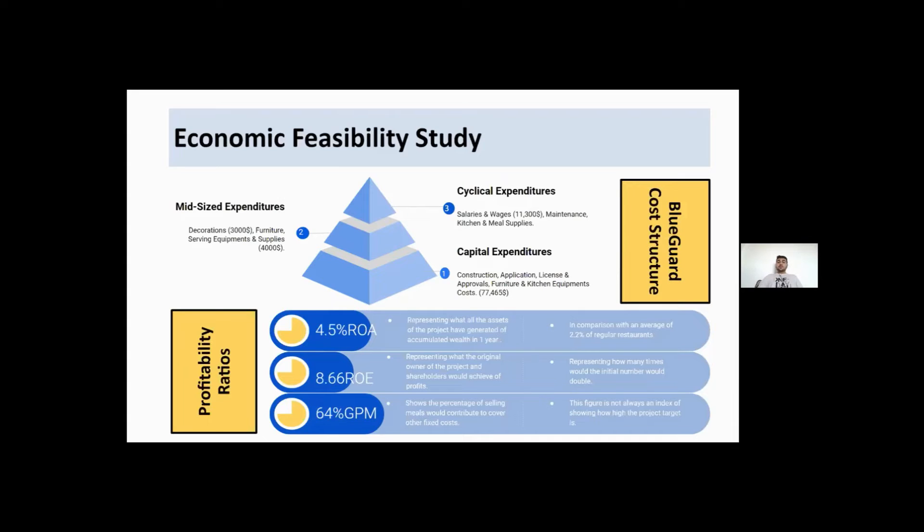So, representing what the original owners of the project and shareholders would achieve of profits, representing how many times what the initial number would be doubled. For example, if you paid $1, it would be doubled by 8.66 times. Here we have the gross profit margin, which is 64%, shows the percentage of how selling meals would contribute to cover other fixed costs. The figure is not always an index of showing how high the project target is.